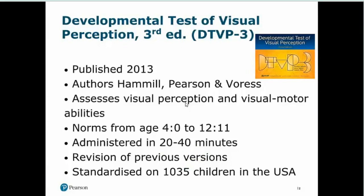The first test we're going to look at is the DTVP3, or the Developmental Test of Visual Perception, third edition. Published in 2013, it's the most recent of all the tests we'll look at today. The authors — Hamill, Pearson, and Boris — are not occupational therapists. In fact, none of the tests we're looking at today have been authored by OTs. Tests written by OTs tend to have more of a functional flavour to them.